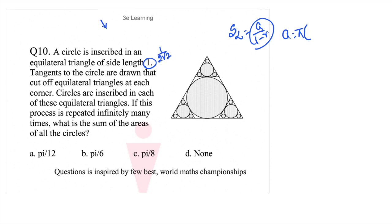So this one is nothing but 1 by 2 root 3 whole square, so this one is nothing but pi by 12. So the first circle area is pi by 12. We need to find the second circle area.